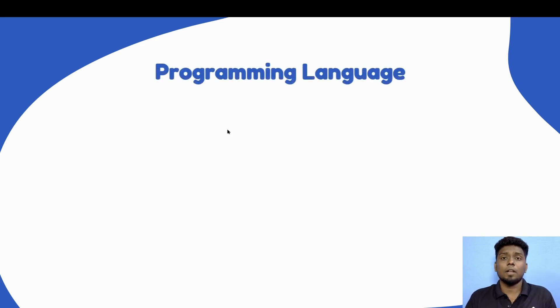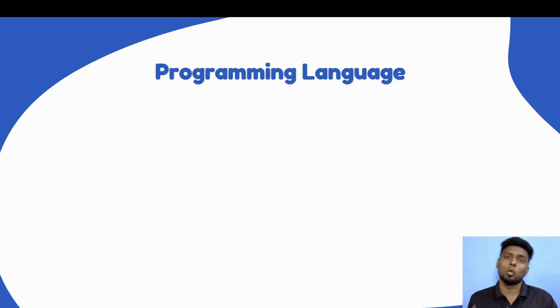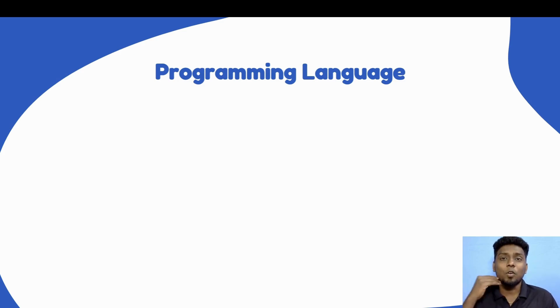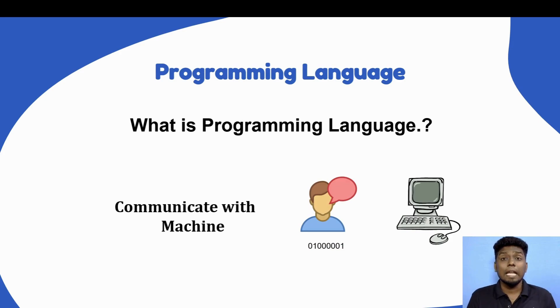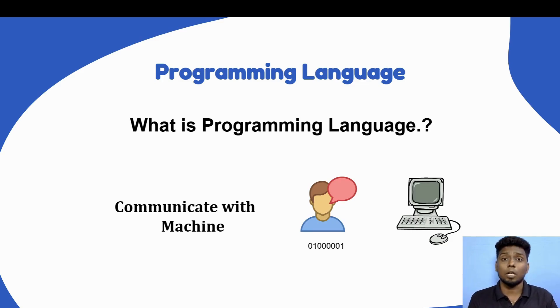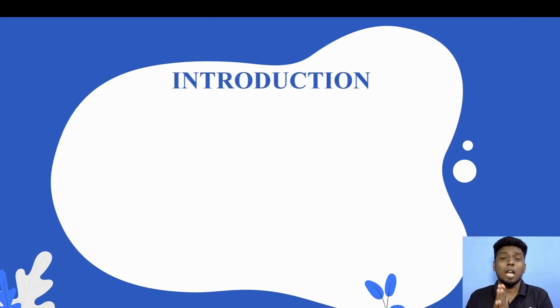First — what is a programming language? Language is a tool, that is language. Then what is a programming language? Like humans communicating with machines, we use a programming language. Programming language is full of zeros and ones. We use programming language to communicate with a computer.